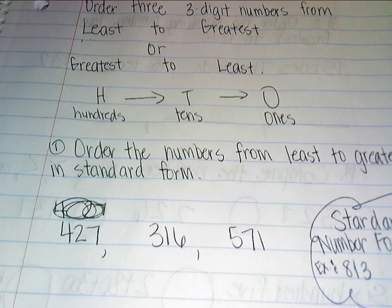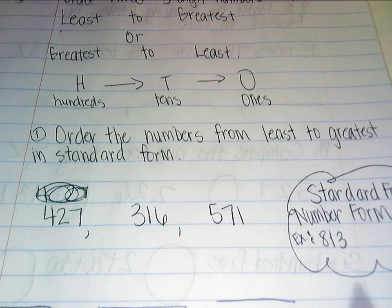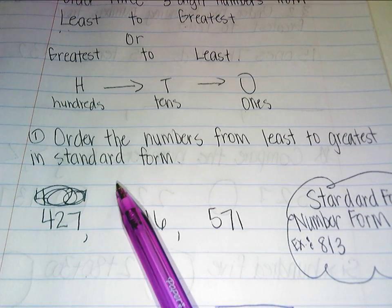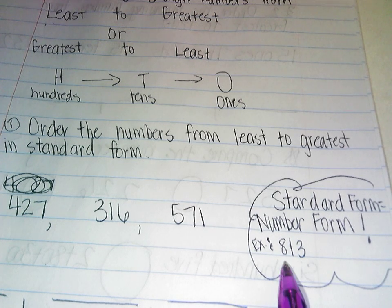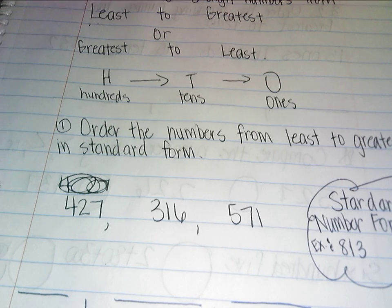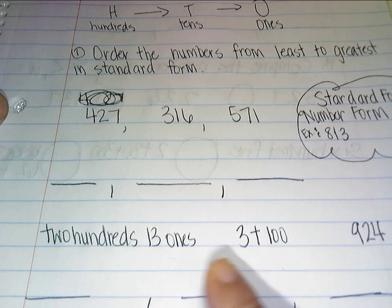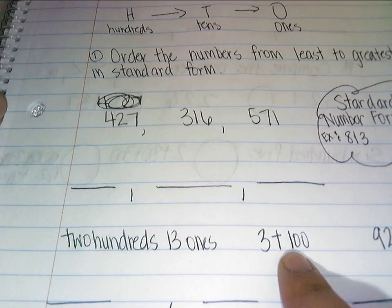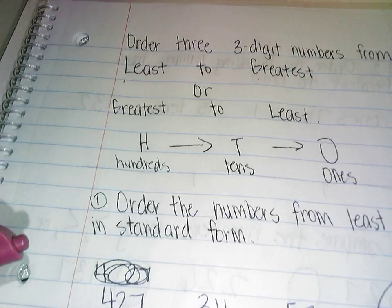You're going to have to order numbers from least to greatest in standard form. That means you have to go from the lowest number to the highest number and write the numbers in standard form. Standard form is the same as number form — for example, 813, the way we're used to seeing regular numbers written. You might have unit form or expanded form, and when you reorder them, you need to write the numbers in standard form. You do not copy the unit form or the expanded form.